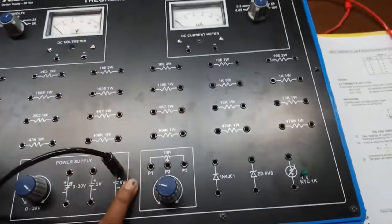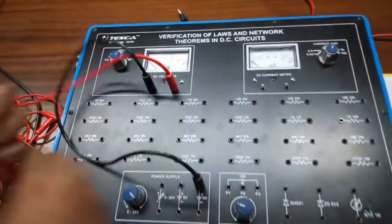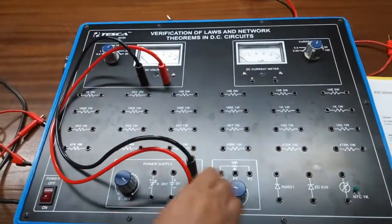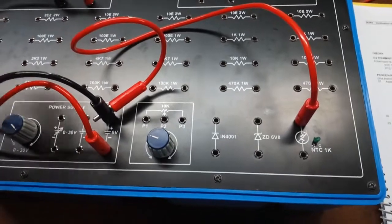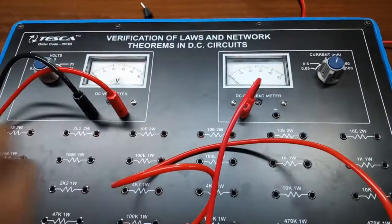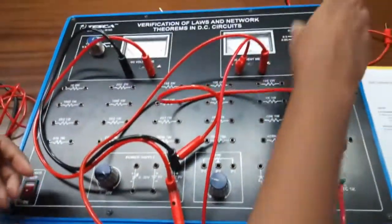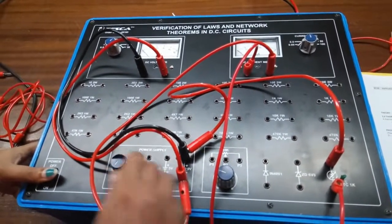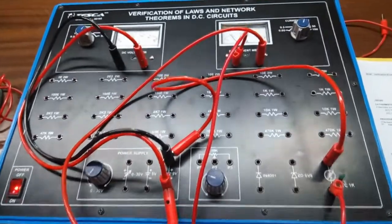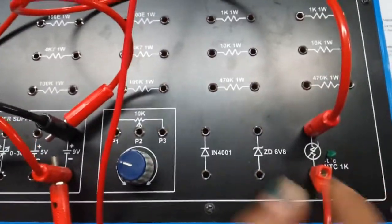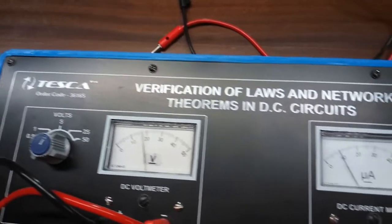First connect the fixed 9 volt power supply to the positive terminal of the DC voltmeter, and connect the negative terminal of the DC voltmeter to the negative terminal of the power supply. From the positive terminal of the power supply, connect the thermistor, then connect the voltmeter across it. Switch on the key. As the temperature increases, the resistance decreases and therefore the current starts to increase — the voltage is fixed but the current is increasing.